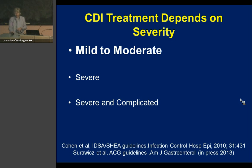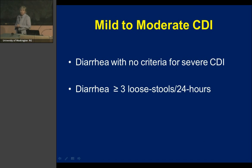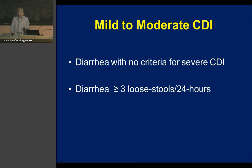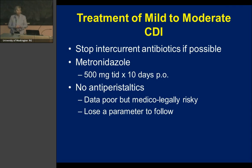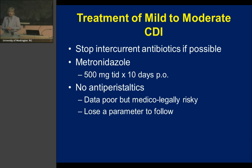Mild-to-moderate C. diff is diarrhea — defined as three or more loose stools per day for 24 to 48 hours — without any criteria for severe disease. In these patients, first think about stopping the intercurrent antibiotics if you can. Metronidazole, because of cost, has been recommended as primary treatment for over a decade. Antidiarrheal agents should be avoided: the literature suggests they may be medically risky, and more importantly, they remove the clinical monitoring parameter of following the diarrhea.